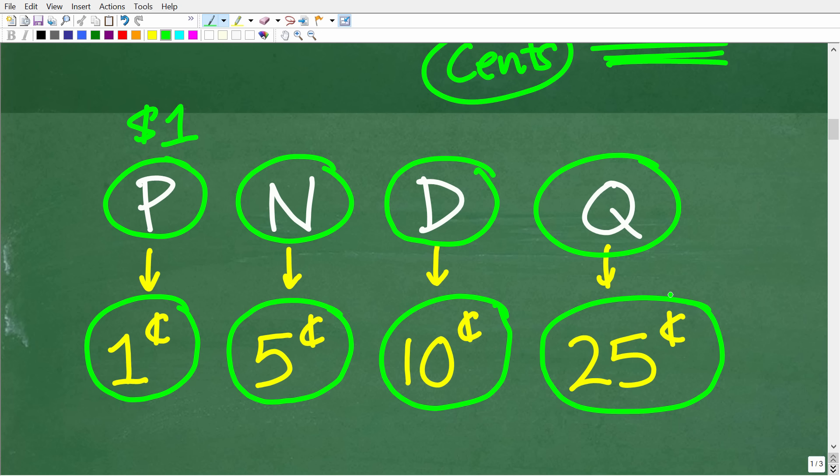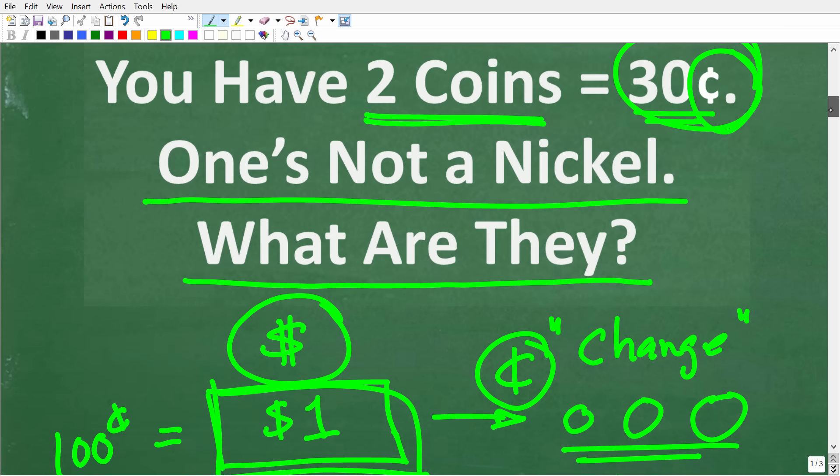Okay, so if we didn't understand the various coins that we can choose from, well, maybe now you can figure out this problem. So we have pennies, nickels, dimes, and quarters.